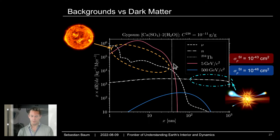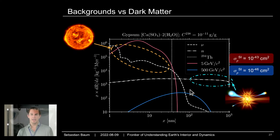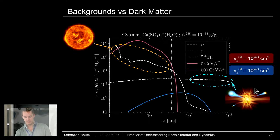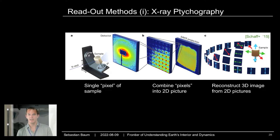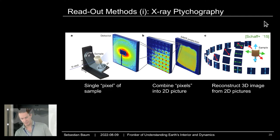For a relatively light dark matter candidate of 5 GeV — like helium — you would have to look at few-nanometer-long tracks. For a heavier candidate at 500 GeV, you only need to resolve tracks on the order of 100 nanometers. So how do you see tracks that are a few nanometers to 100 nanometers long — these defects in a crystal? People are now trying to explore this in the lab. Let me show you some ideas for modern microscopy techniques that might allow reading out these tracks in relatively large samples.